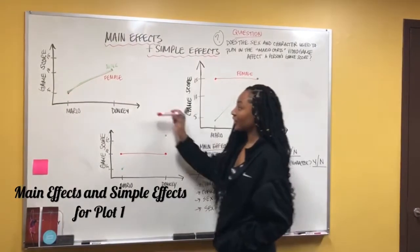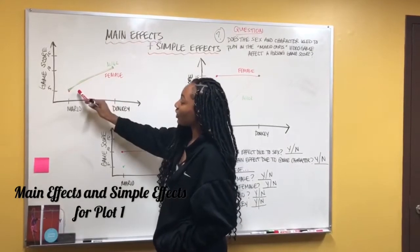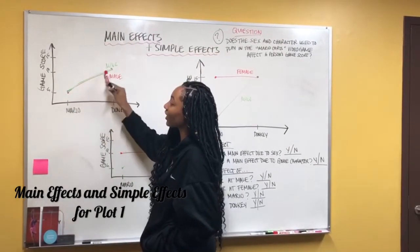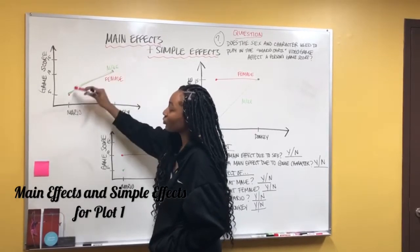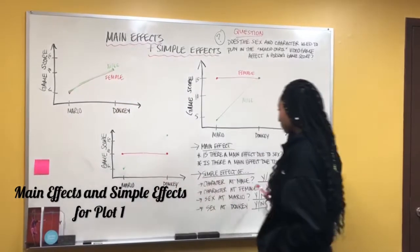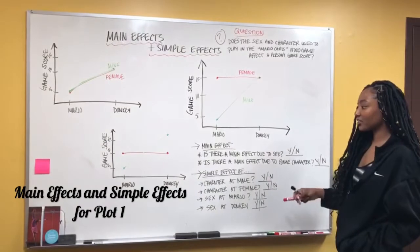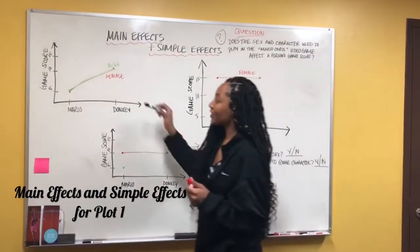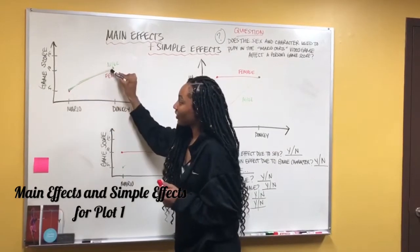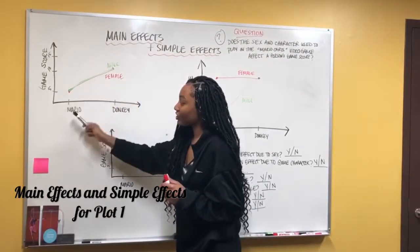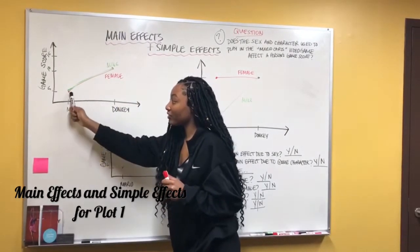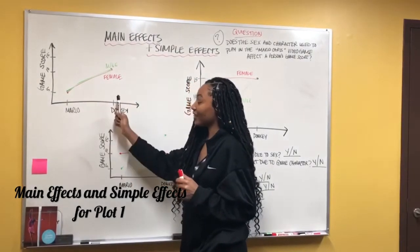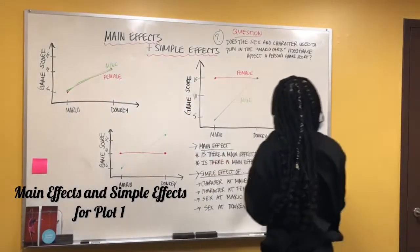Looking at this first graph, these lines are overlapping in different colors — male is right on top of female, so they scored the same in each case. Is there a main effect due to sex? Because the sexes scored the same, there is no main effect due to sex. Even at Mario, the females scored the same as the males as they did at Donkey. So we're going to circle no.